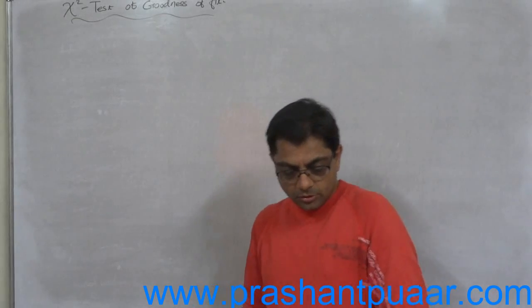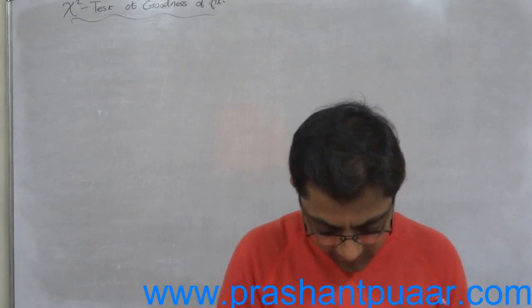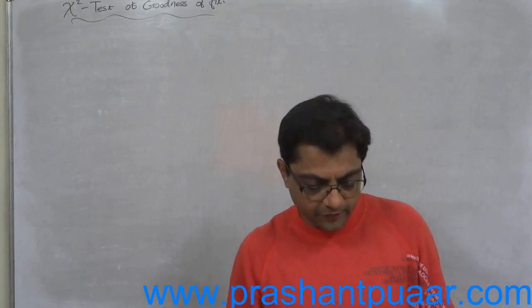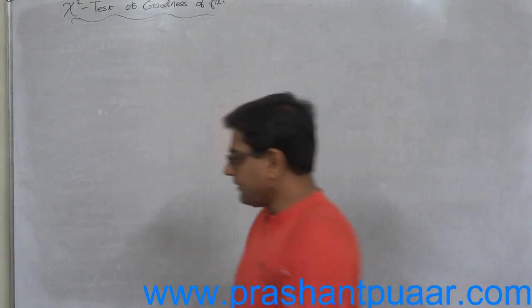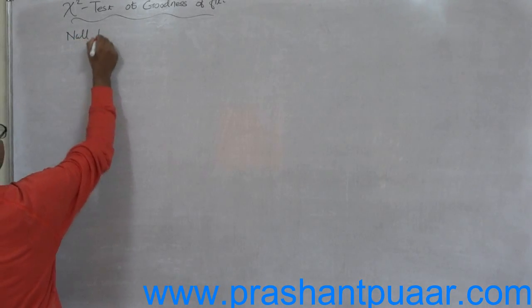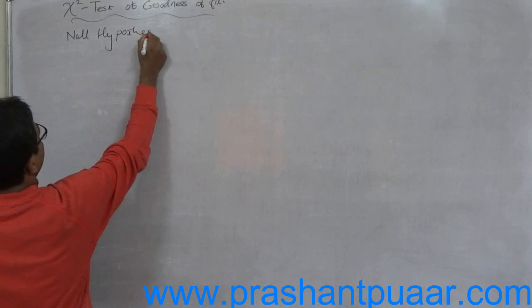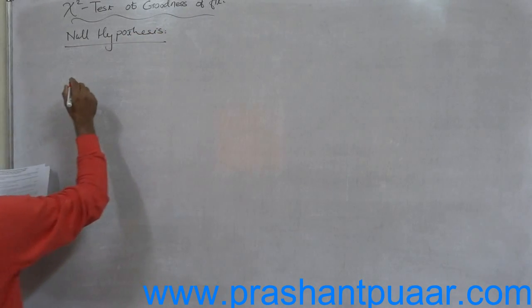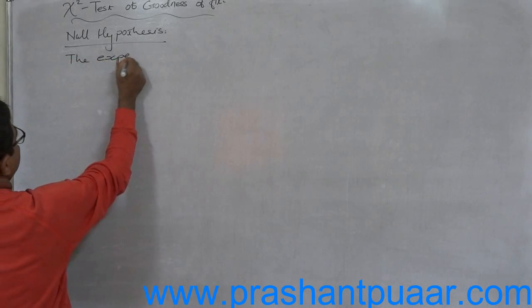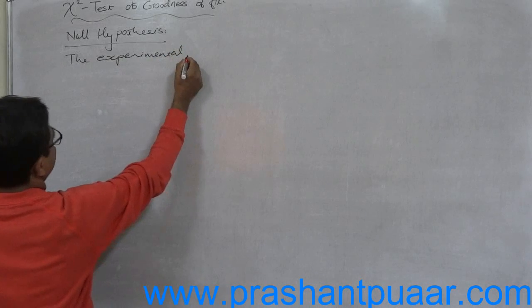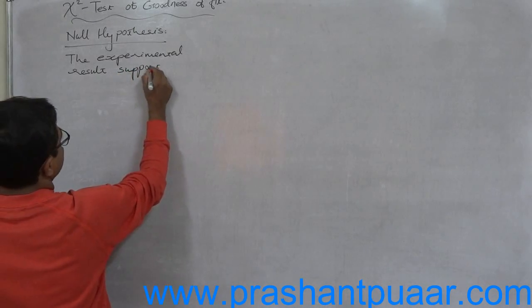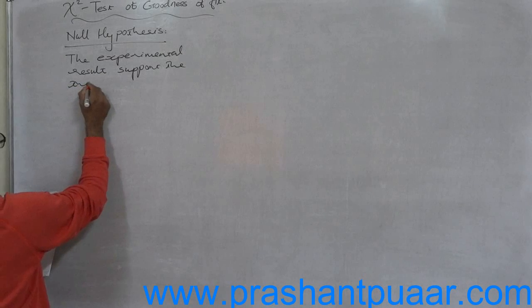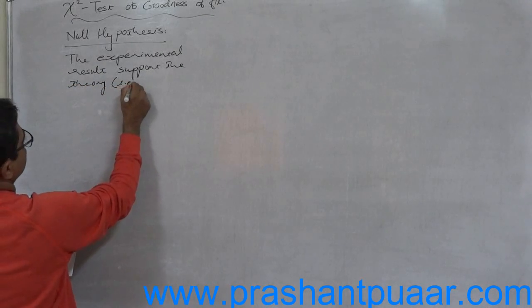In this case, the expected frequency will be the summation of observed or actual frequency in the ratio of 9:3:3:1. We can directly start with the null hypothesis. The null hypothesis will be: the experimental result supports the theory, that means the results of the experiment are in the ratio of 9:3:3:1.